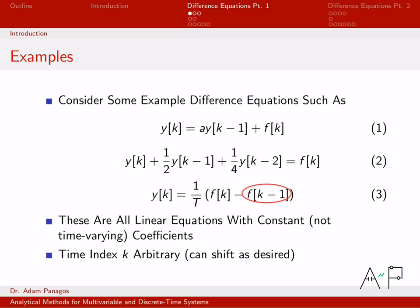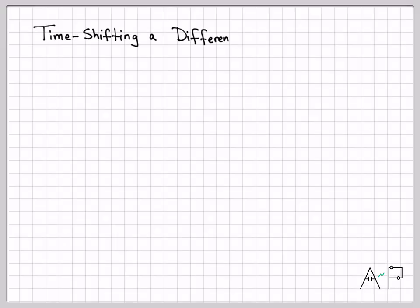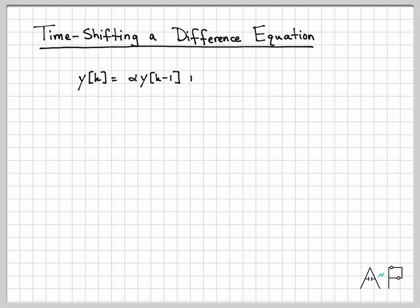These equations relate the current output with previous outputs and inputs, and possibly previous inputs. This relationship between input, output, and their previous versions must hold for all time k — that's an important point. This brings us to the operation of time-shifting a difference equation. Take y[k] = a·y[k-1] + f[k], which is true for all k. We can algebraically replace every k with k+2.